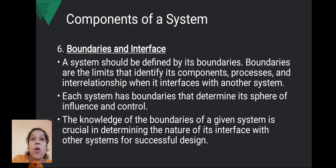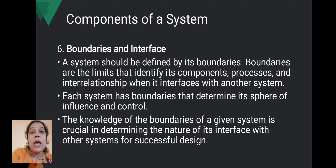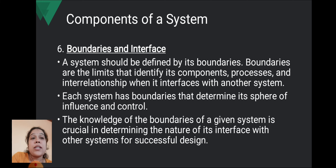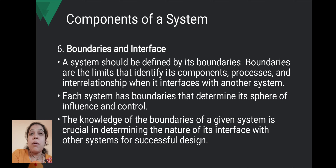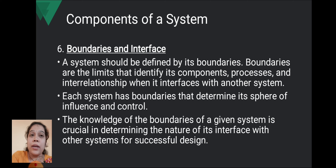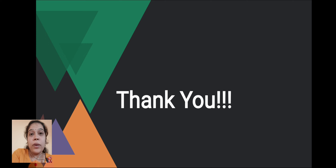Next is boundaries and interface. A system should be defined by its boundaries. Boundaries are the limits that identify its components, processes, and interrelationships when it interfaces with another system. Each system has boundaries that determine the sphere of influence and control. Knowledge of the boundaries of a given system is crucial for the successful design of the system and its interface with other systems. For example, when organizing a program, teachers set rules about timing and behavior — that is the boundary. The system's control must remain within those boundaries. Next important topic is the System Development Life Cycle — SDLC — which you will see in the next video. Thank you.